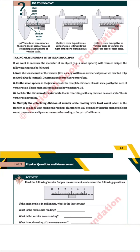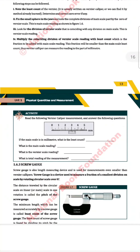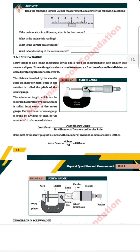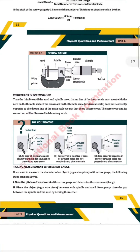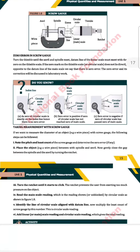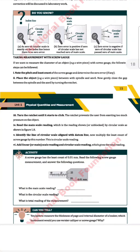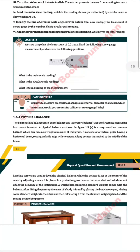Taking measurements with vernier calipers is also explained with the help of a diagram, followed by an activity. The screw gauge is also explained with the help of an original picture as well as a labeled diagram, with all important points and headings given in bold letters. There is also an activity and exercise related to the screw gauge.